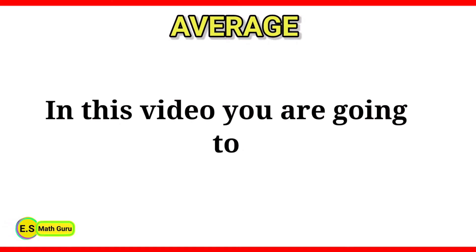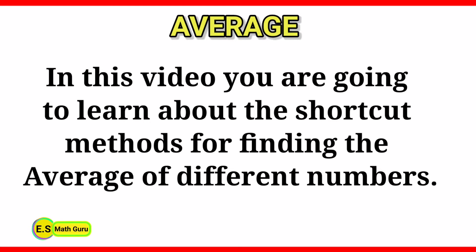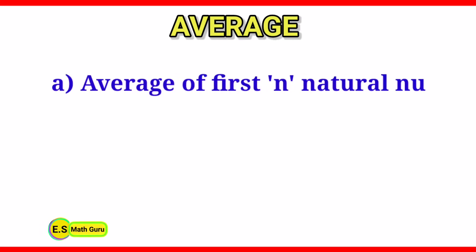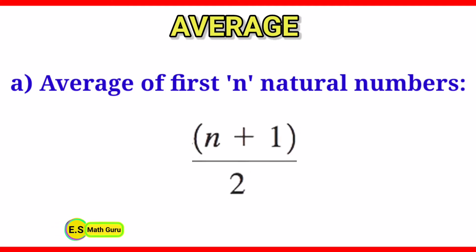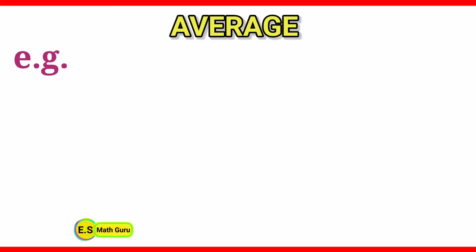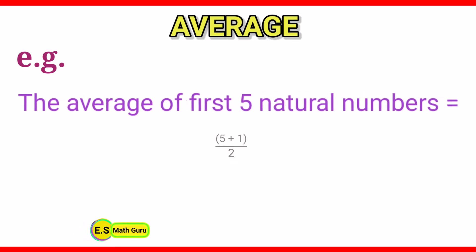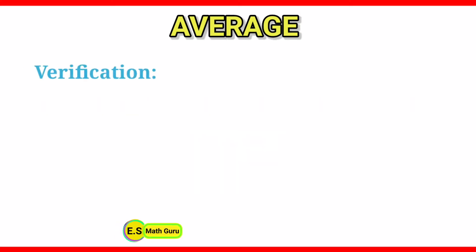Today's topic is average. In this video you are going to learn about the shortcut methods for finding the average of different numbers. The shortcut method for finding the average of first N natural numbers is (N+1)/2. For example, the average of first 5 natural numbers is (5+1)/2, which is equal to 6/2, which gives 3. Therefore the average of first 5 natural numbers is 3.